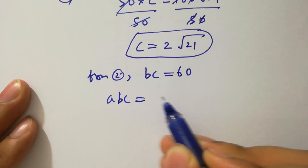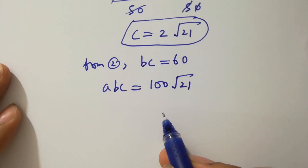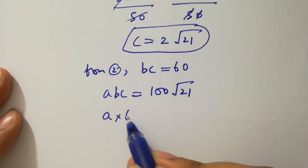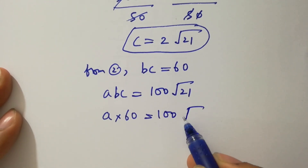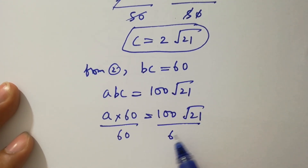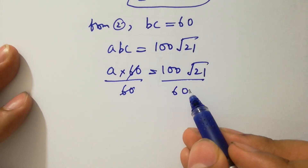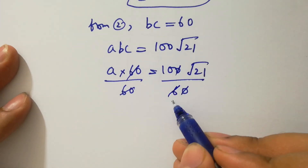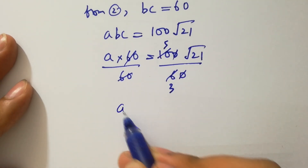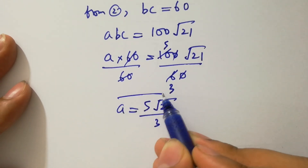From the second equation, bc equals 60. Since abc equals 100 square root of 21, substituting gives 60 times a equals 100 square root of 21. Dividing both sides by 60, the 60s cancel, giving a equals 5 square root of 21 over 3.